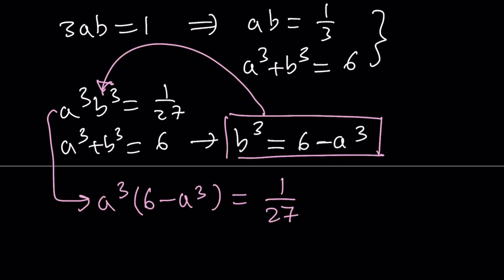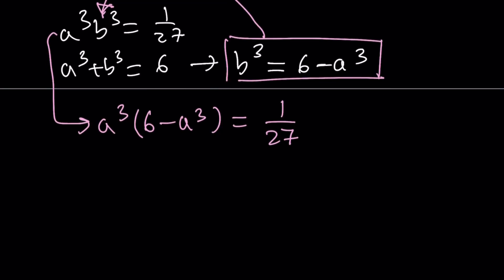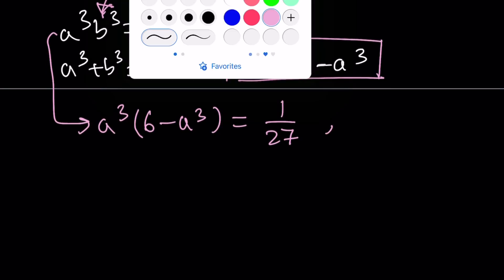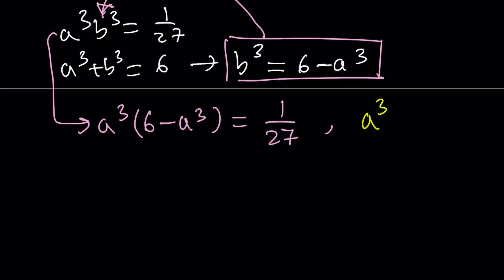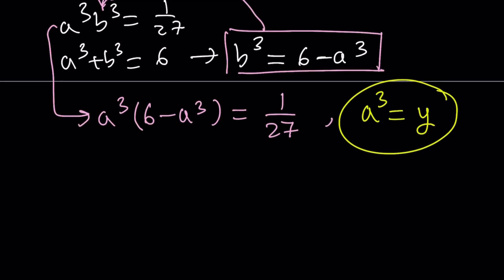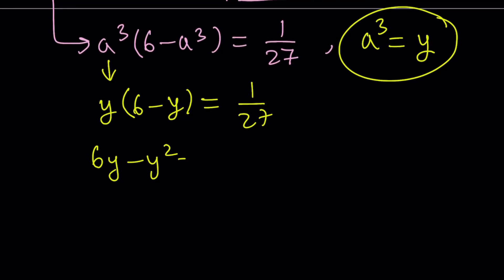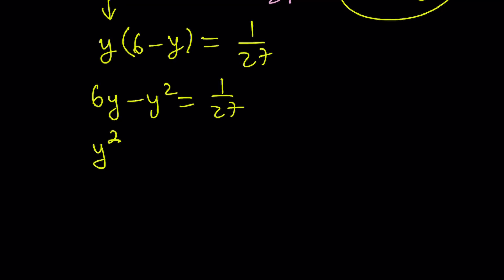So a³ times b³. B³, I'm going to replace with 6 minus a³. And the product is equal to 1 over 27. So this is in fact a quadratic equation. Even though it looks like 6 degree, it doesn't have anything besides the 6th power and the 3rd power. So it can easily be turned into a quadratic equation by using substitution. I'm going to say a³, let's set it equal to y. So suppose a³ equals y. I'm going to replace a³ with y. So it's going to be y times 6 minus y equals 1 over 27. And then if you distribute, you get 6y minus y² equals 1 over 27. I would like to multiply both sides by negative 1, so that I can get a positive y².